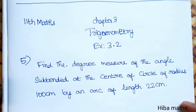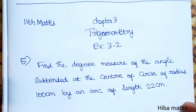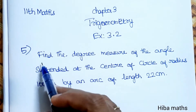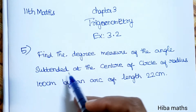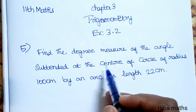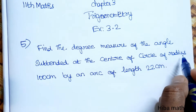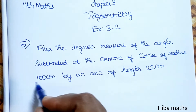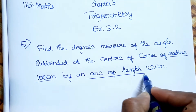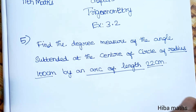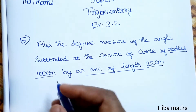Hello students, welcome to HivaMax 11th Standard Max Chapter 3 Trigonometry Exercise 3.2, 5th question. Find the degree measure of the angle subtended at the center of a circle of radius 100 cm by an arc of length 22 cm.